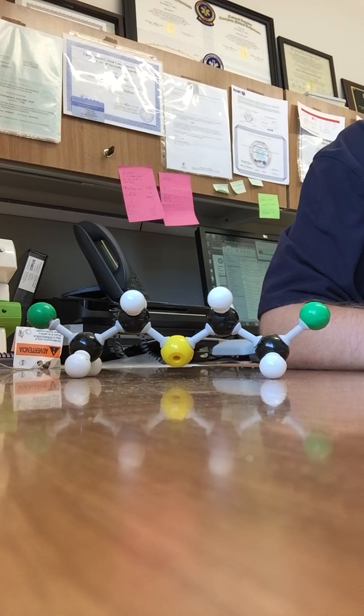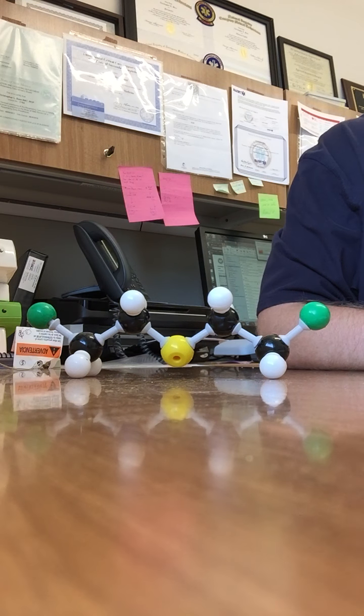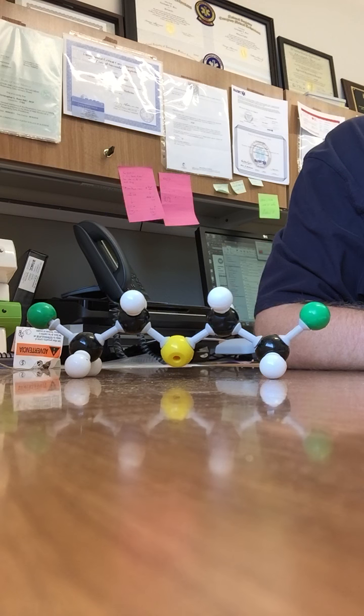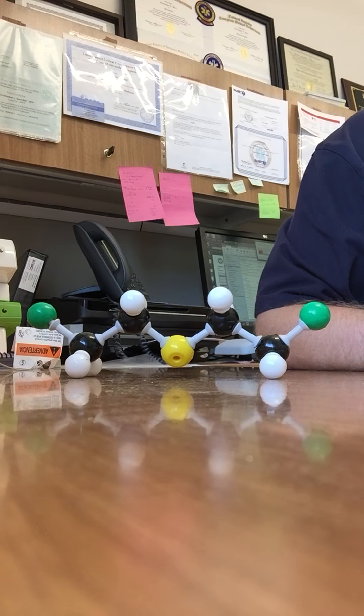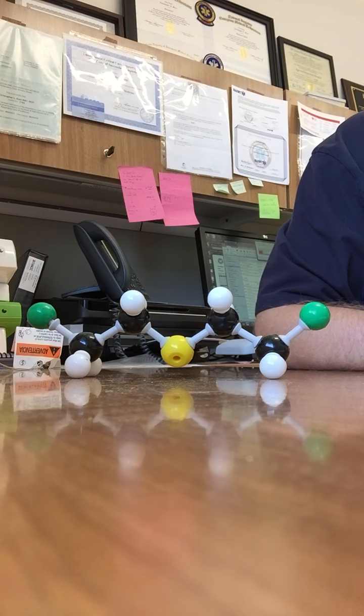And these agents are the vesicants. The vesicants are a rather large but not particularly diverse class of agents, and vesicant means to produce blisters. So these are sometimes known as the blistering agents.